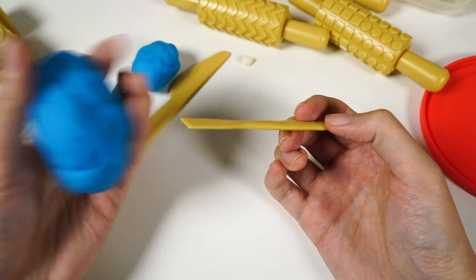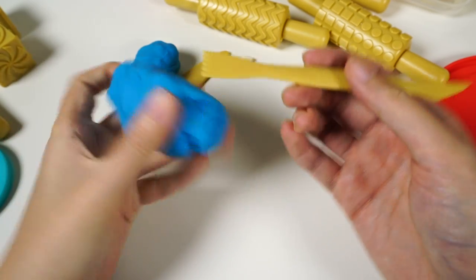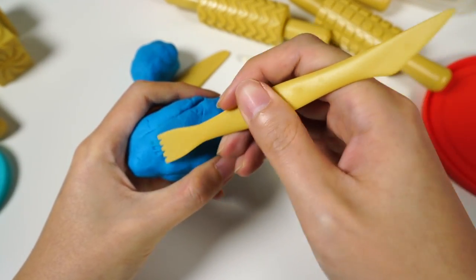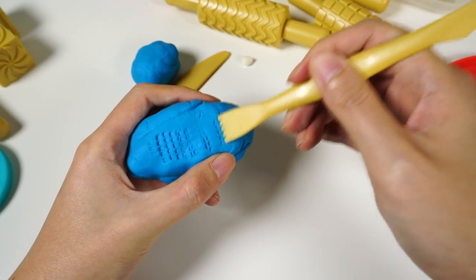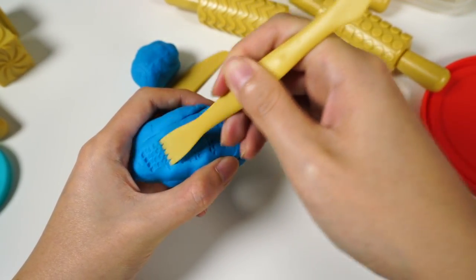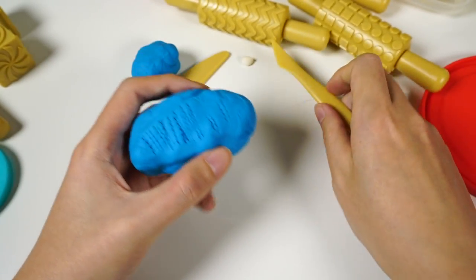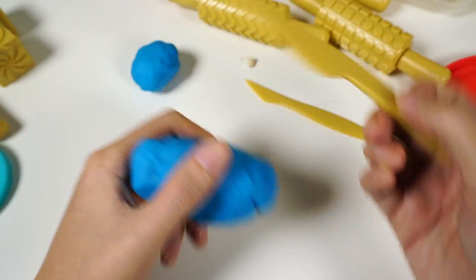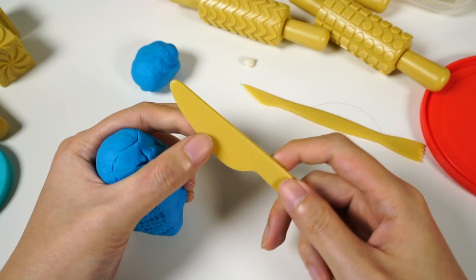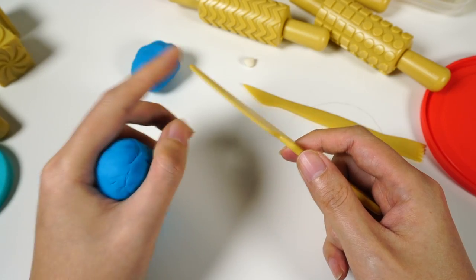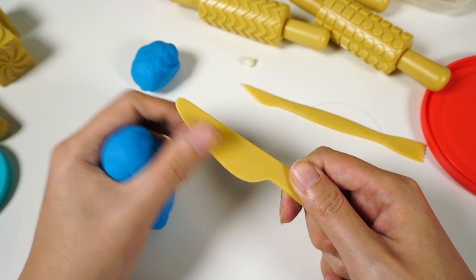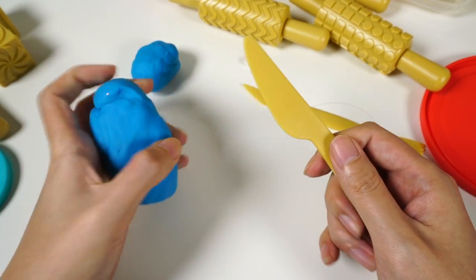That's one other way you can use it. This thing I think is also to make textures. And this one I think is just to cut it. This thing is not sharp at all and it's plastic so I think it's very safe.